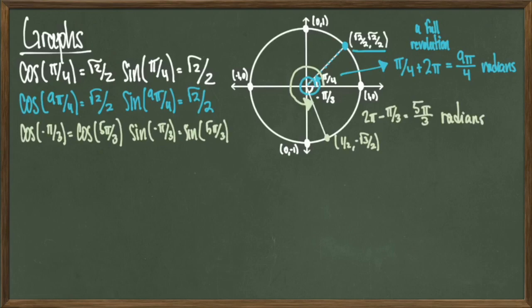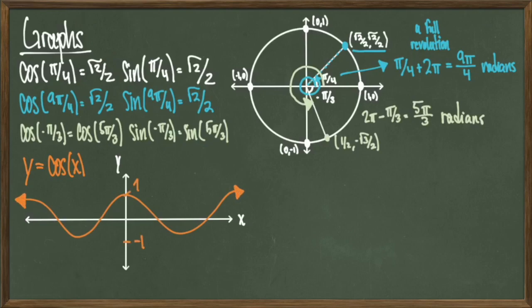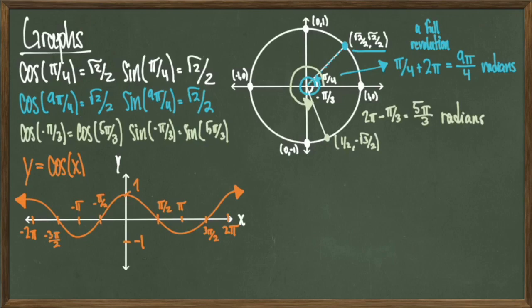This intuition helps us understand the graph of cosine as a function. Let y equal cosine of x — the graph stretches as tall as 1, goes down as low as negative 1, and left and right it goes on forever. Cosine of x has infinitely many x-intercepts and infinitely many points where it achieves both positive and negative 1. Some popular points to put on the graph would be plus or minus pi over 2, plus or minus pi, plus or minus 3 pi over 2, and so on.